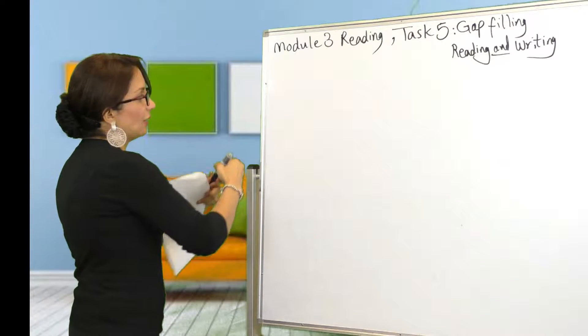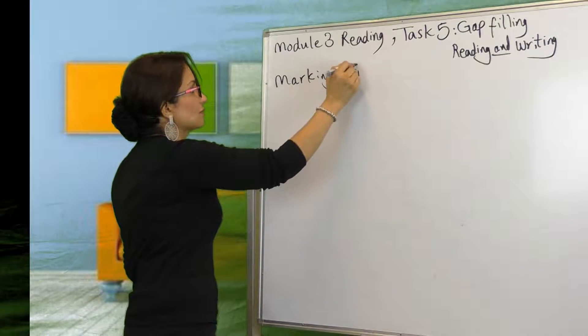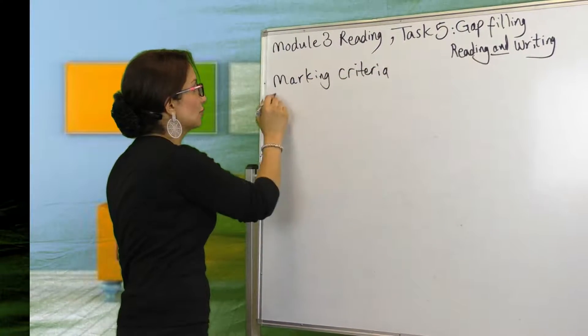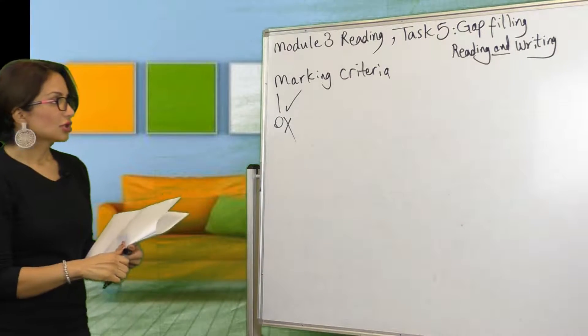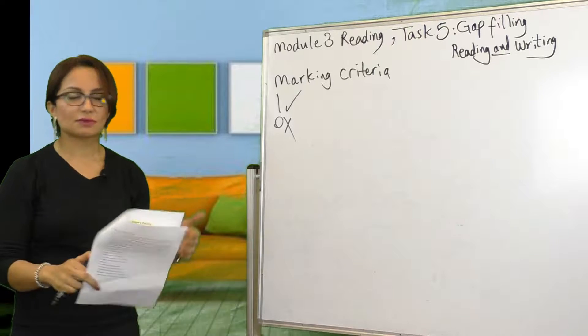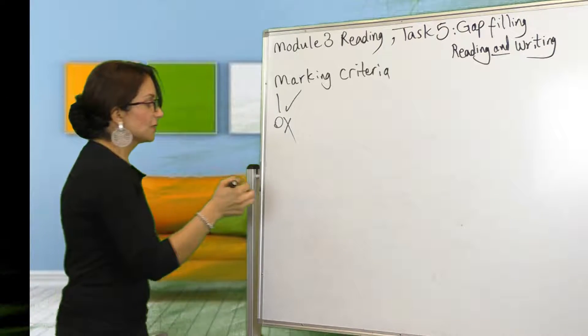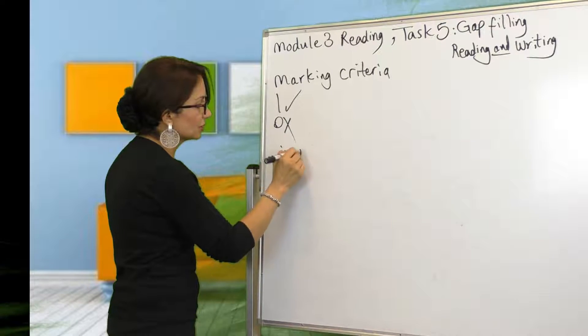These are the two big differences. However, marking is still one or zero. Marking criteria for this one is still one or zero. You will get one for each correct answer and zero for each incorrect answer.